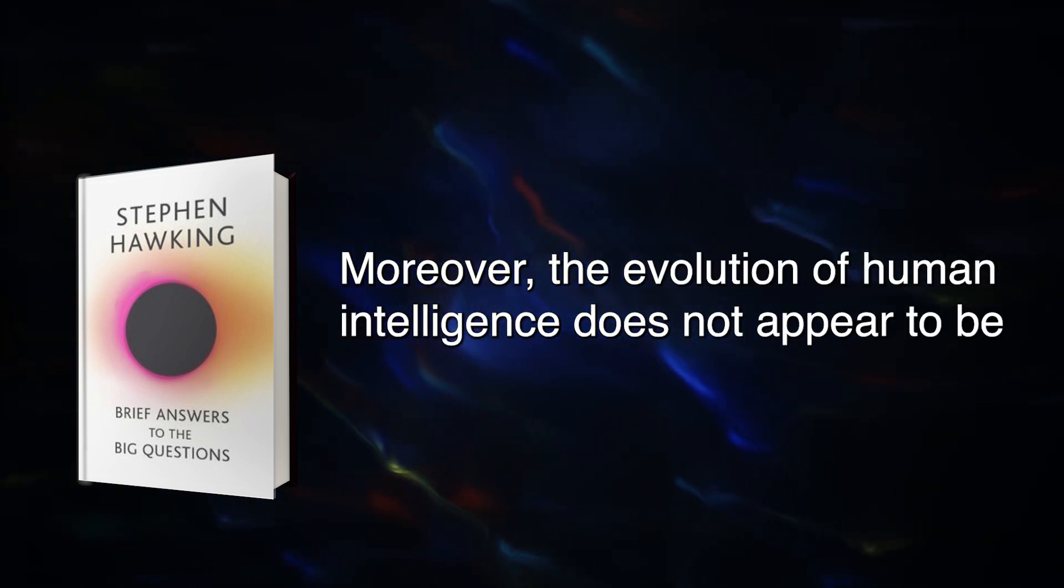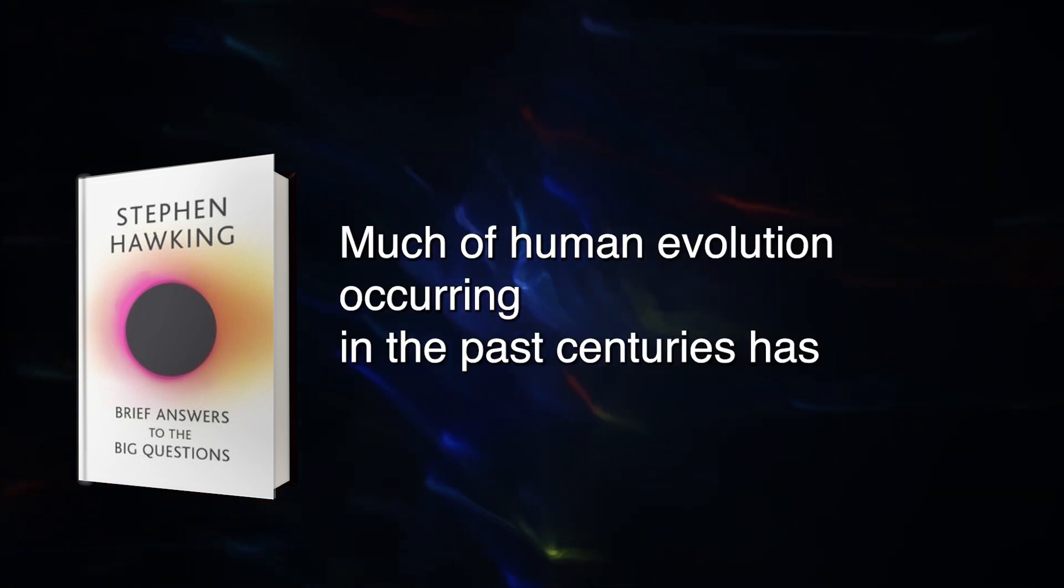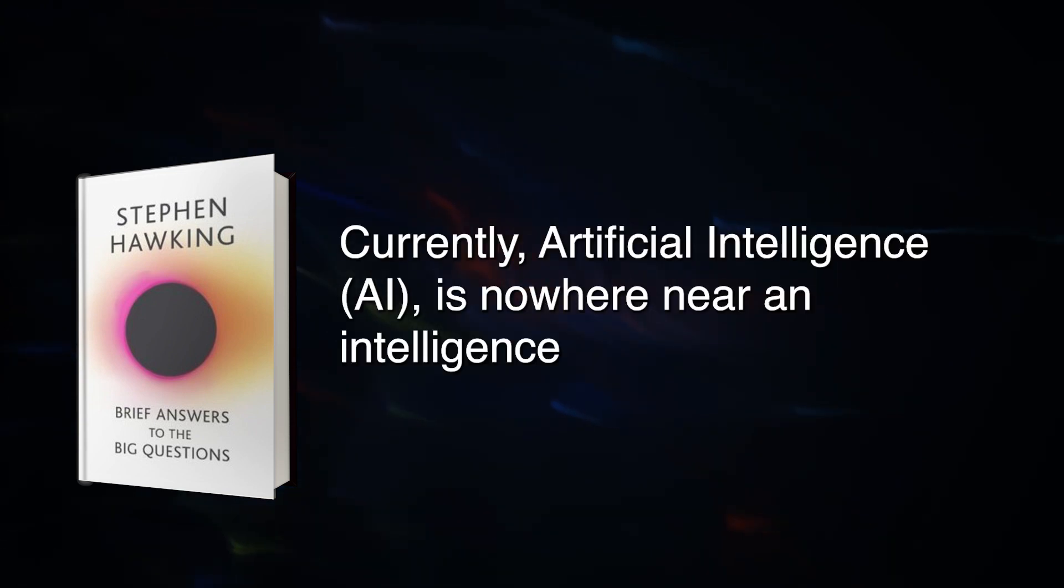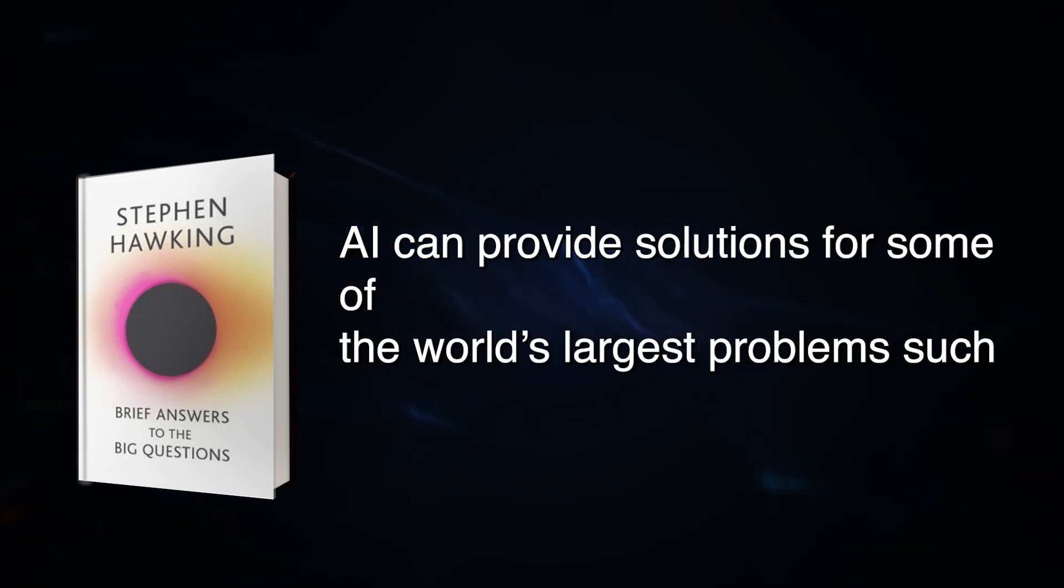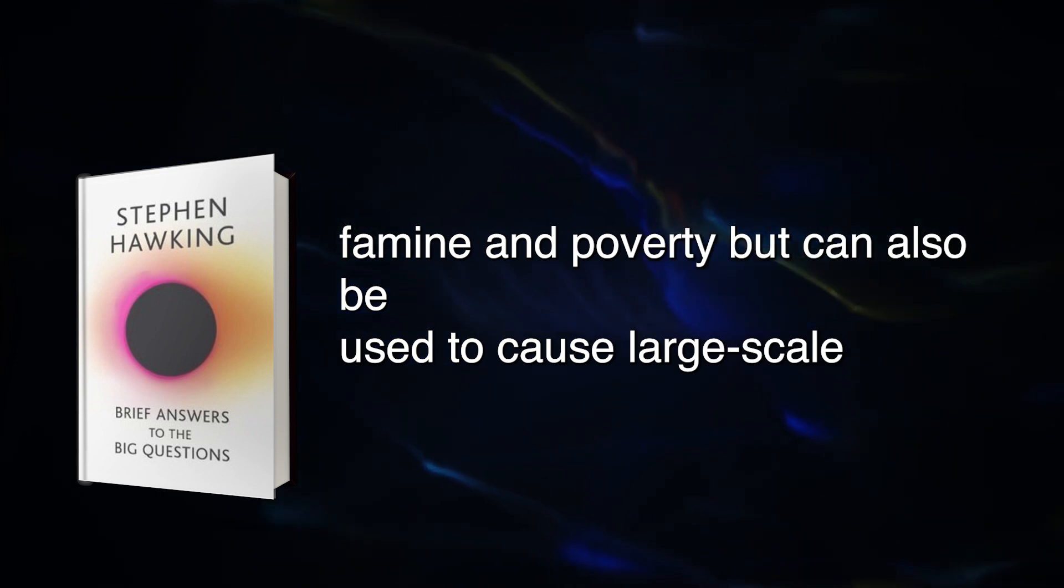Moreover, the evolution of human intelligence does not appear to be slowing down, only rapidly continuing. Much of human evolution occurring in the past centuries has been technologically based. Currently, artificial intelligence is nowhere near an intelligence equal to or greater than humans. AI can provide solutions for some of the world's largest problems such as famine and poverty but can also be used to cause large-scale destruction.